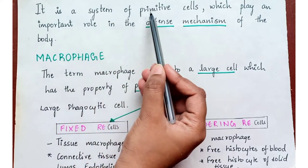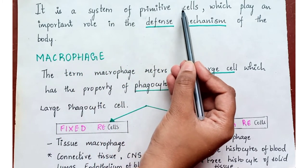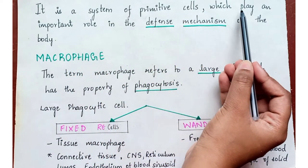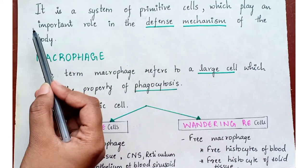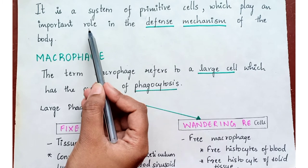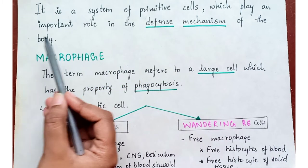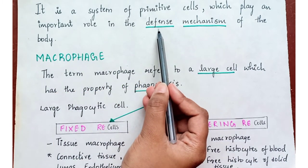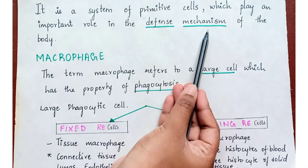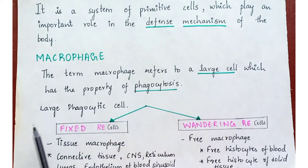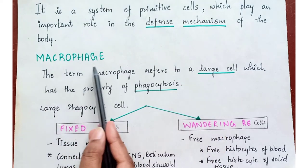The Reticulo-Endothelial System is a system of primitive cells which play an important role in the defense mechanism of the body. Mainly, it plays an important role in defense mechanism.